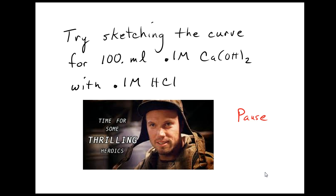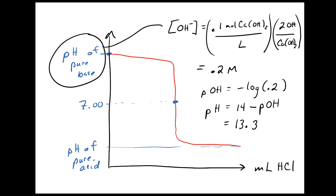Try sketching the curve for 100 milliliters of 0.10 molar Ca(OH)2 with 0.1 molar HCl. The basic shape of the curve is going to be like this. I'm just going to put some numbers in.